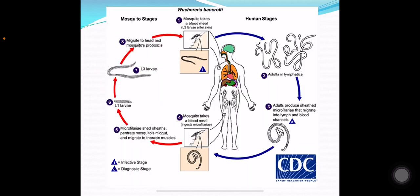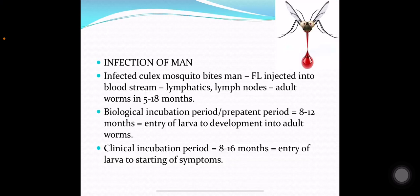The infective larvae are injected into man by the mosquito during the blood meal. Some portion of the life cycle exists in man and some in the vector, which could be Culex, Aedes, or Anopheles mosquito. The filariform larvae enter the bloodstream, go to the lymphatics and lymph nodes, and adult worms develop in about 5 to 18 months. The biological incubation period, or pre-patent period, is about 8 to 12 months — this is the time from entry of larvae to development of adult worms. The clinical incubation period, from entry of larvae to the onset of symptoms, is 8 to 16 months.